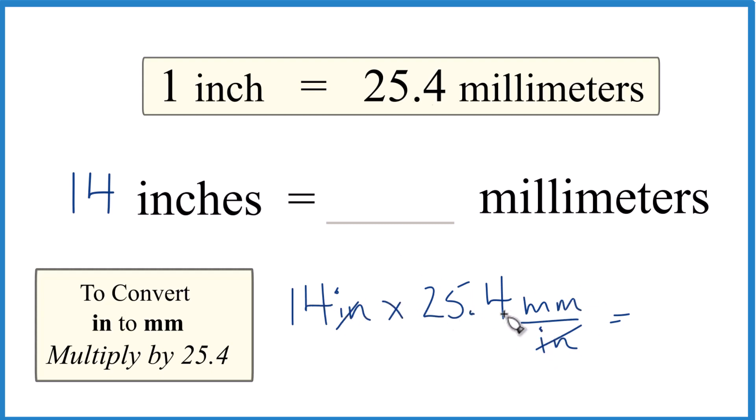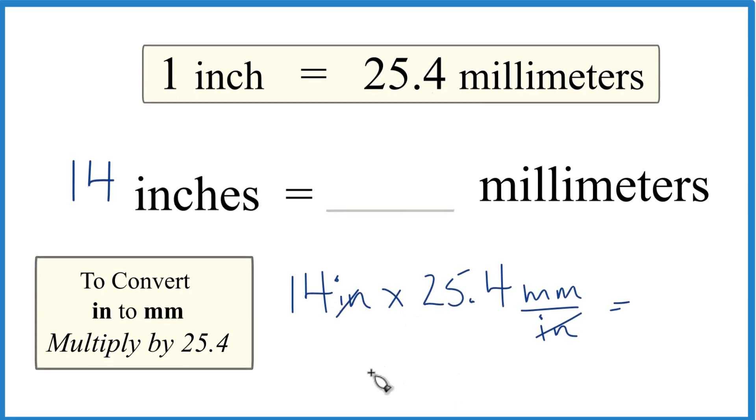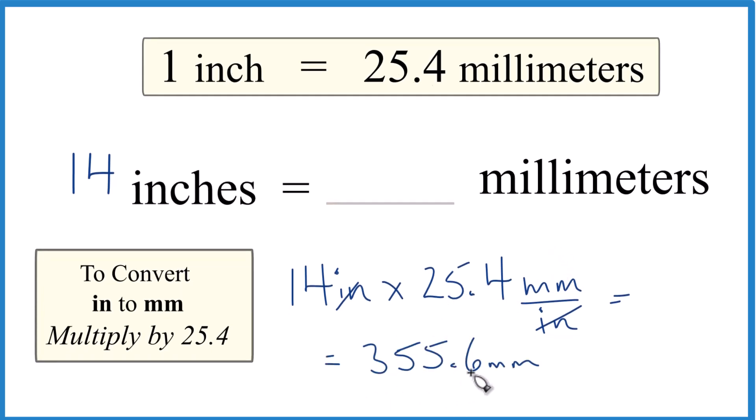So 14 times 25.4 millimeters, that gives us 355.6 millimeters. This is Dr. B converting 14 inches to millimeters. The answer, 355.6. Thanks for watching.